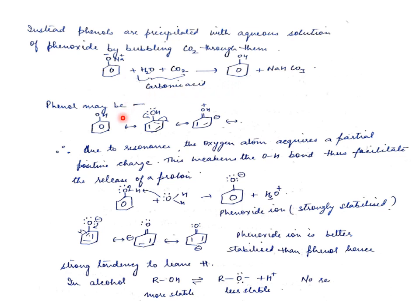Looking at phenol's reactions, let's first see its resonating structures. The OH group is an electron donating group. It donates electrons into the ring, giving several resonating structures where a negative charge appears on the ring and a partial positive charge on oxygen. Due to this partial positive charge on oxygen, the O–H bond weakens, and the H can be released easily.